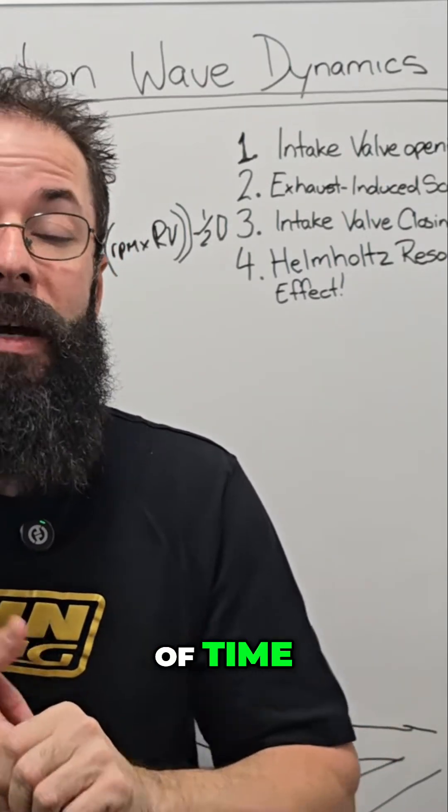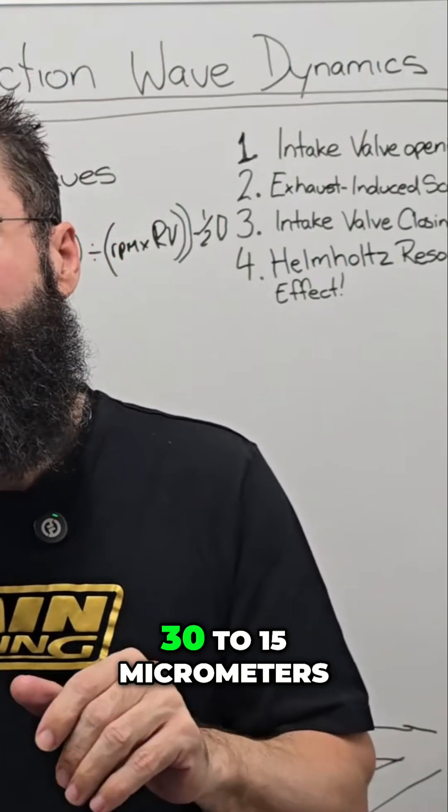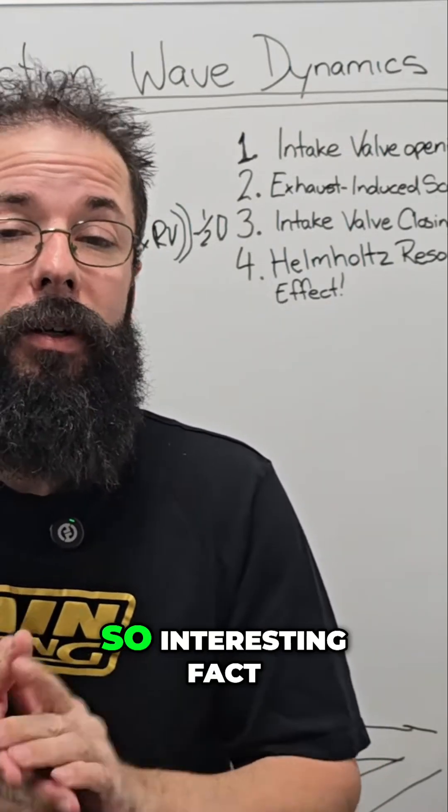And again, interesting point which I was going to bring up but didn't - ran out of time. A good race carby is actually around about 30 to 15 micrometers, so interesting fact.